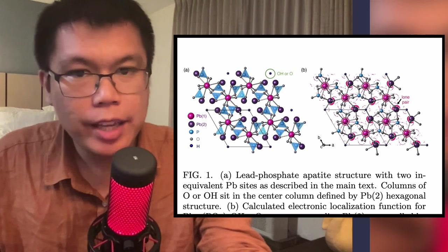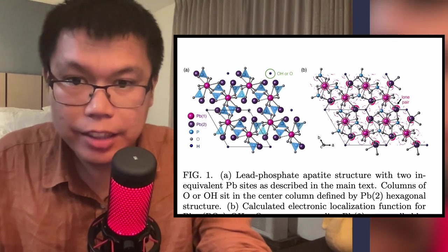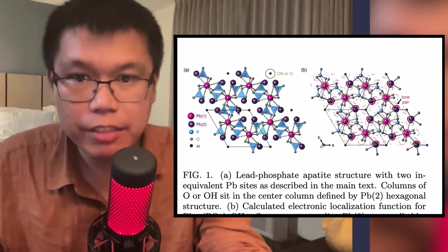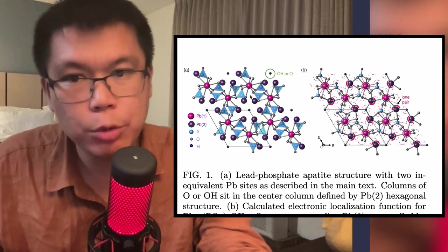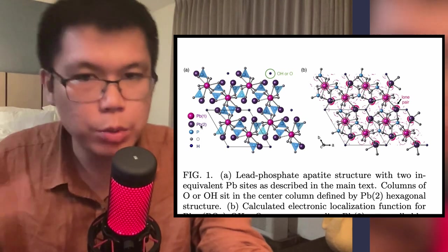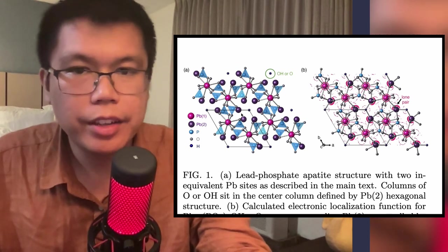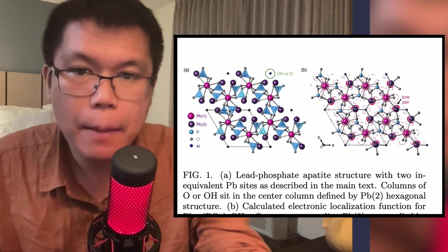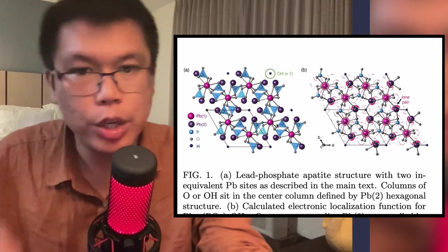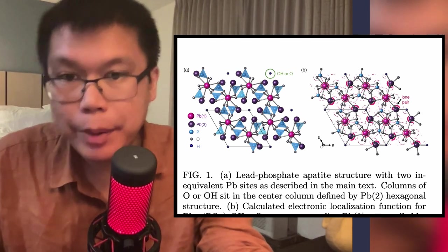Basically, if you take this black dot in the center, which represents a hydrogen, it's surrounded by six of these purple circles, which represent this lead two, what they call it. Around it, you can see, for example, these six more pink circles that represent the lead one. And the structure repeats and repeats and repeats.